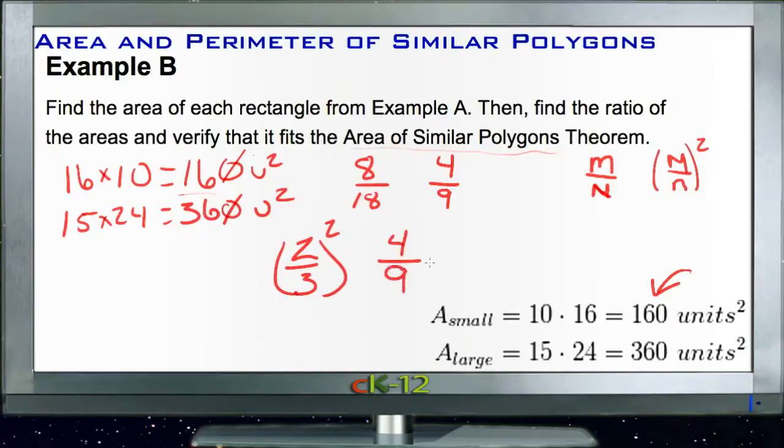That would make perfect sense because if our original ratio was 2 out of 3 and we were going to square that, then we'd have 2 squared on top, that's 4, and 3 squared on the bottom, that's 9. So indeed the areas of those two figures do fit that area of similar polygons theorem, since the original ratio was 2 out of 3 and the ratio of their two areas together was 4 out of 9.